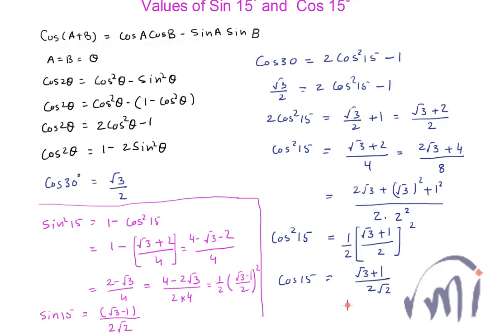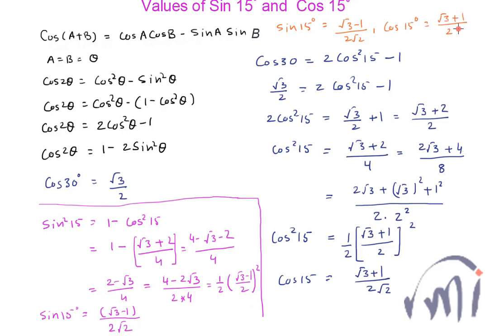This is the value of sin 15 and cos 15. Note that (1 minus √3) would give a negative value, but 15 degrees lies in the first quadrant where both sin θ and cos θ are positive. So to keep the value positive, we take (√3 minus 1), not (1 minus √3). So sin 15° equals (√3 minus 1)/(2√2) and cos 15° equals (√3 plus 1)/(2√2), and from here we can find all other trigonometric ratios.